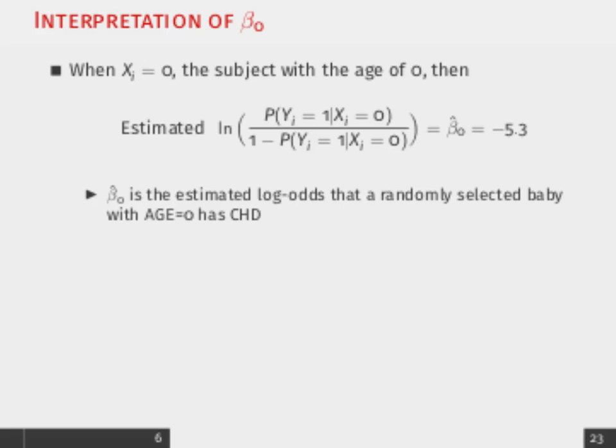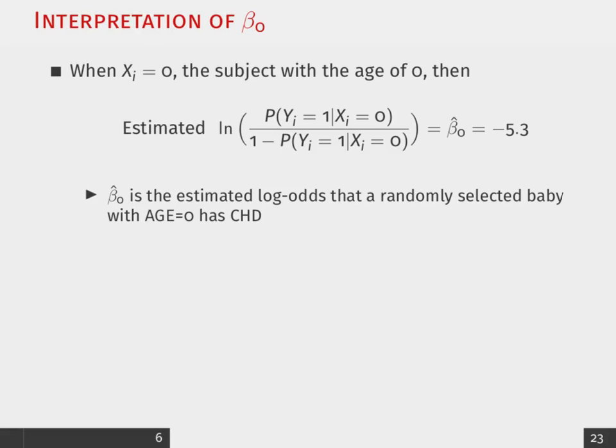Now, this doesn't really make much sense for a number of reasons. But the estimated intercept here is the estimated log odds that just like a randomly selected baby essentially with age 0 has CHD.